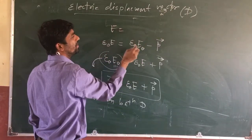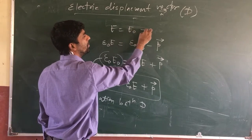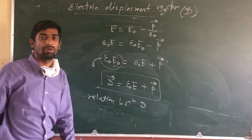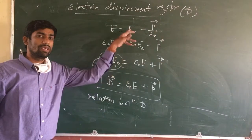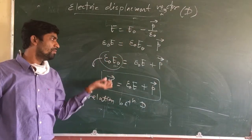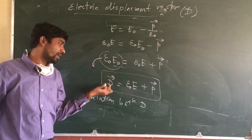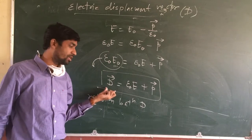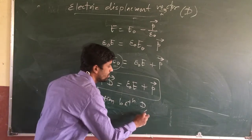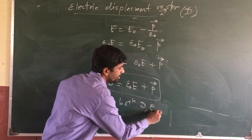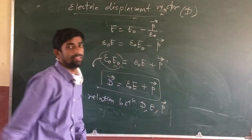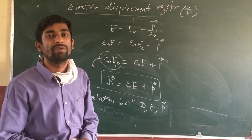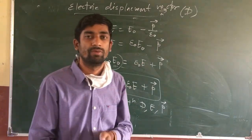The net electric field is equal to E naught minus the polarization vector P divided by epsilon naught. Arranging this equation, the quantity D equals epsilon naught E plus P is known as the electric displacement vector, and this equation gives the relation between electric displacement vector D, electric field E, and polarization P. Thank you.